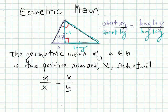Next, we want to look at the geometric mean. In order to do this, let's just first read the definition here. The geometric mean of A and B is a positive number X, such that A over X equals X over B.